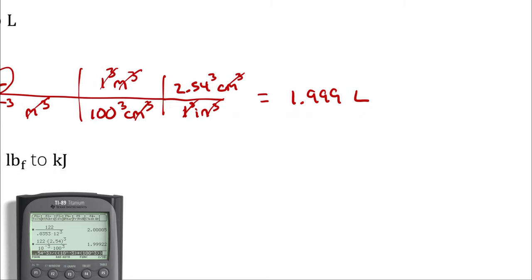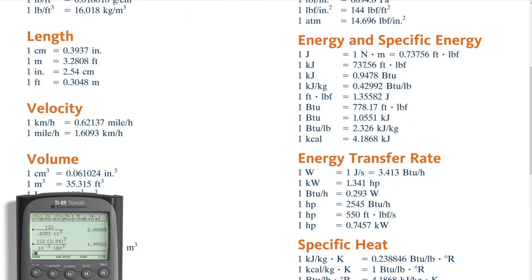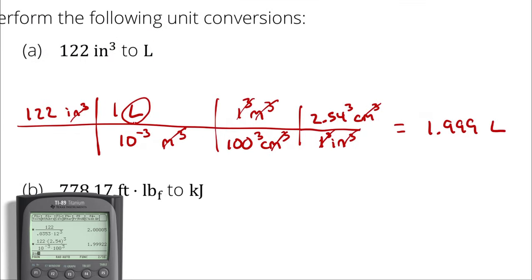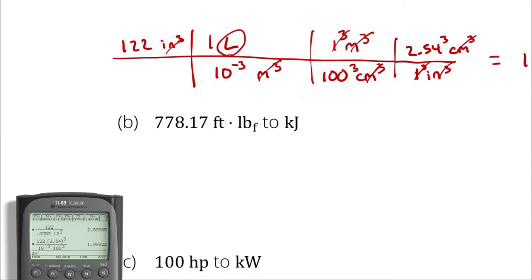Before we move on, let me point out: we got slightly under 2 this time; last time we got slightly over 2. All of these unit conversion factors are rounded to some degree or another, so anytime you're converting units, you're going to have a little bit of error as a result. The best thing to do is to get as far as you can symbolically in a problem before you involve unit conversions so you can limit that error. Also try to limit unit conversion steps as much as possible — 2 steps is probably going to have less error overall than 3 steps.